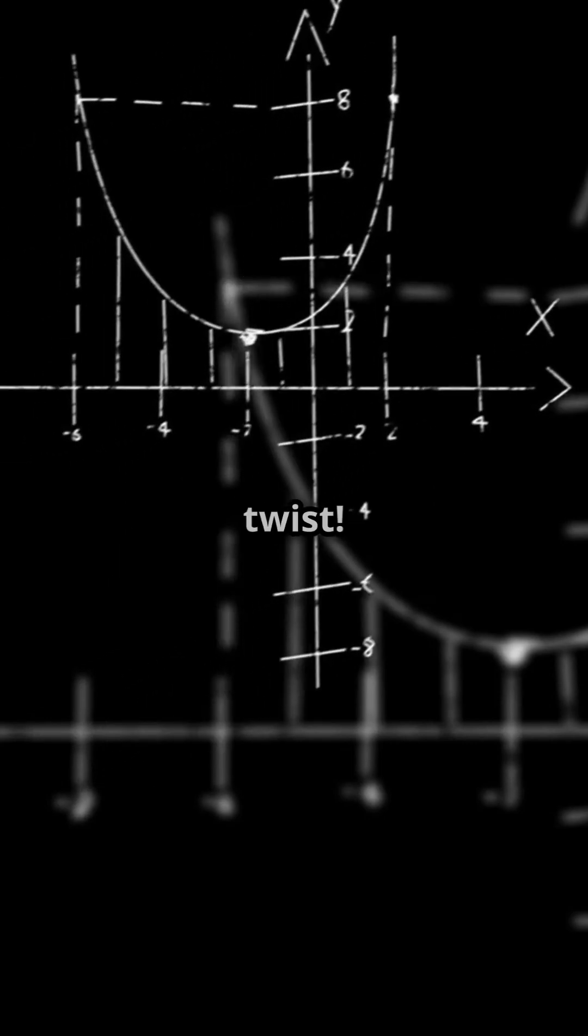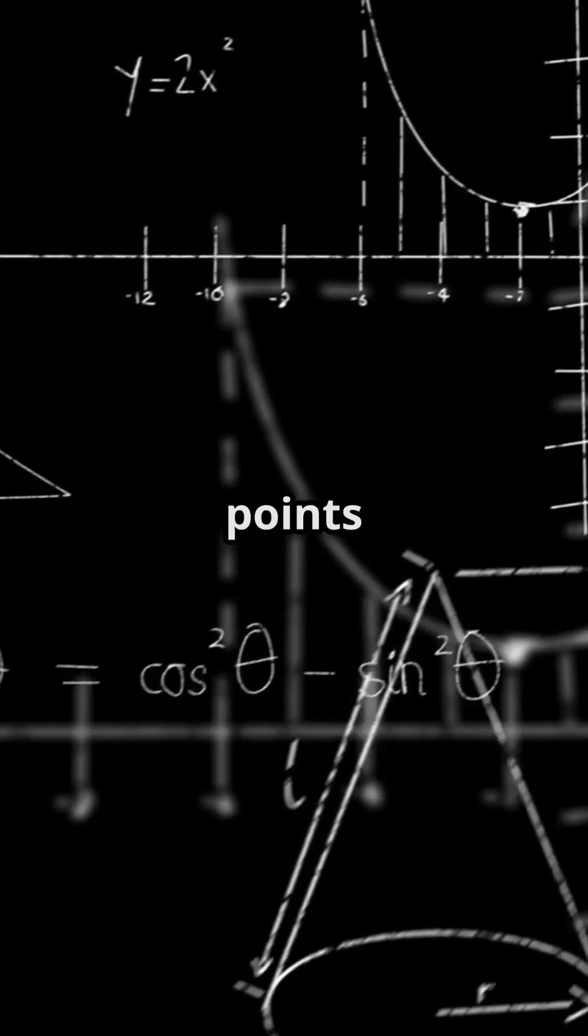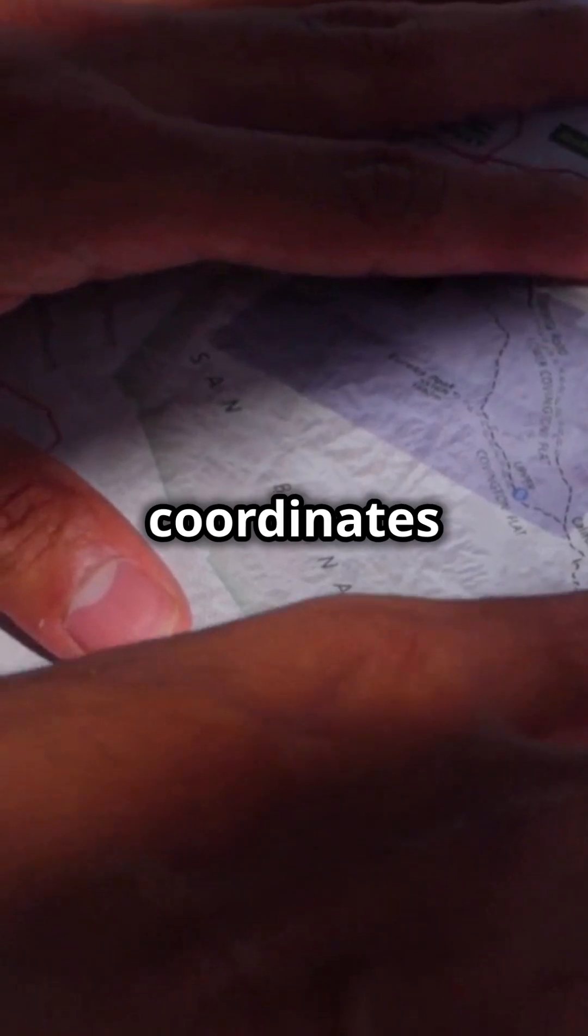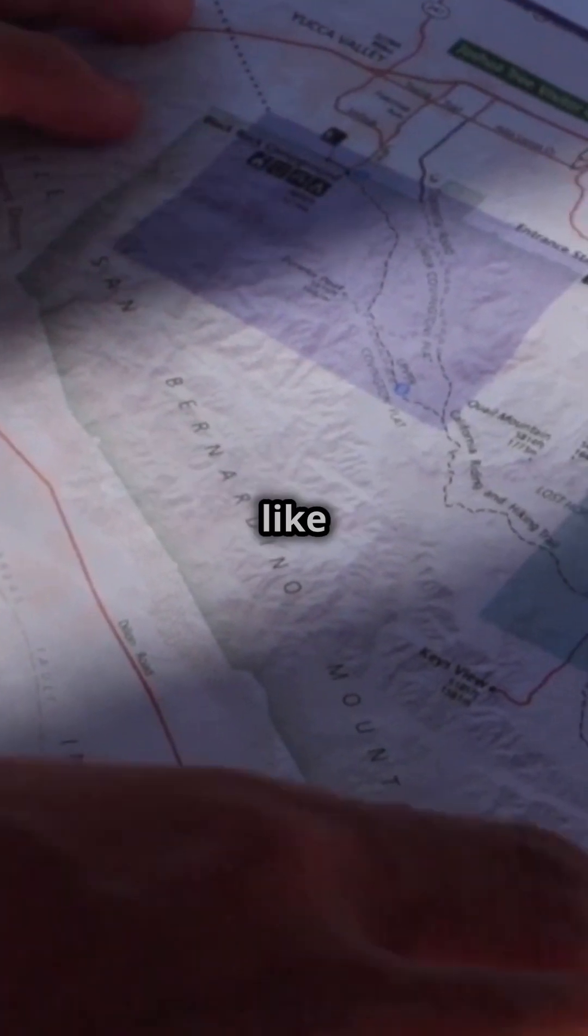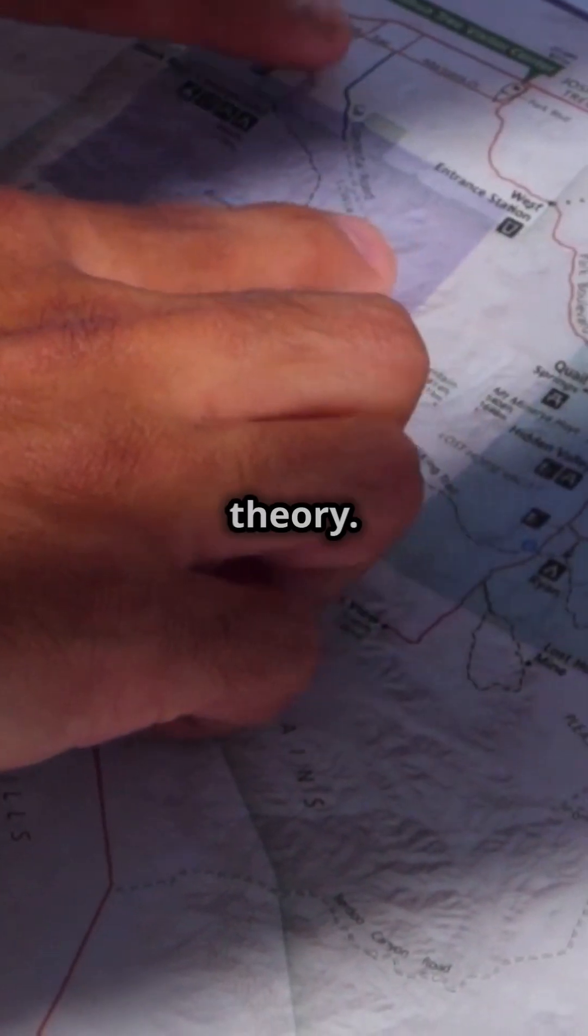Picture it as a donut-shaped graph with a twist. Now, rational points are those special spots where both coordinates are fractions. Finding them is like hunting for buried treasure in number theory.